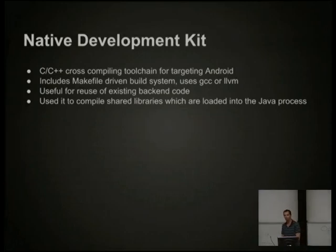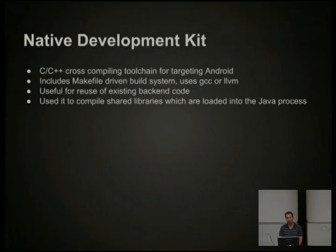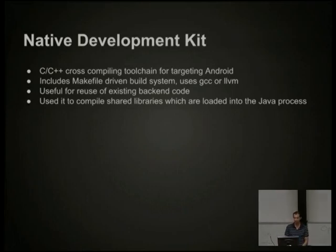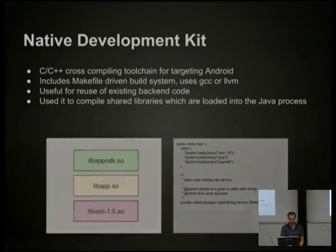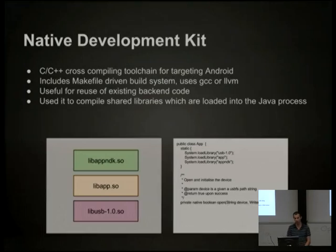The Native Development Kit is something Google provides as part of the Android development environment — a cross-compiling toolchain for Android so you can target any of the platforms Android supports: ARM, MIPS, x86. It uses a makefile build system, which is pretty nice for embedded software developers. You write a little makefile stub, compile your C code, and it integrates into the Android application. This allows reuse of any existing code — in our case a little protocol library, but it could be something as complex as a voice codec and modem. Those shared libraries are then loaded into the Java virtual machine.